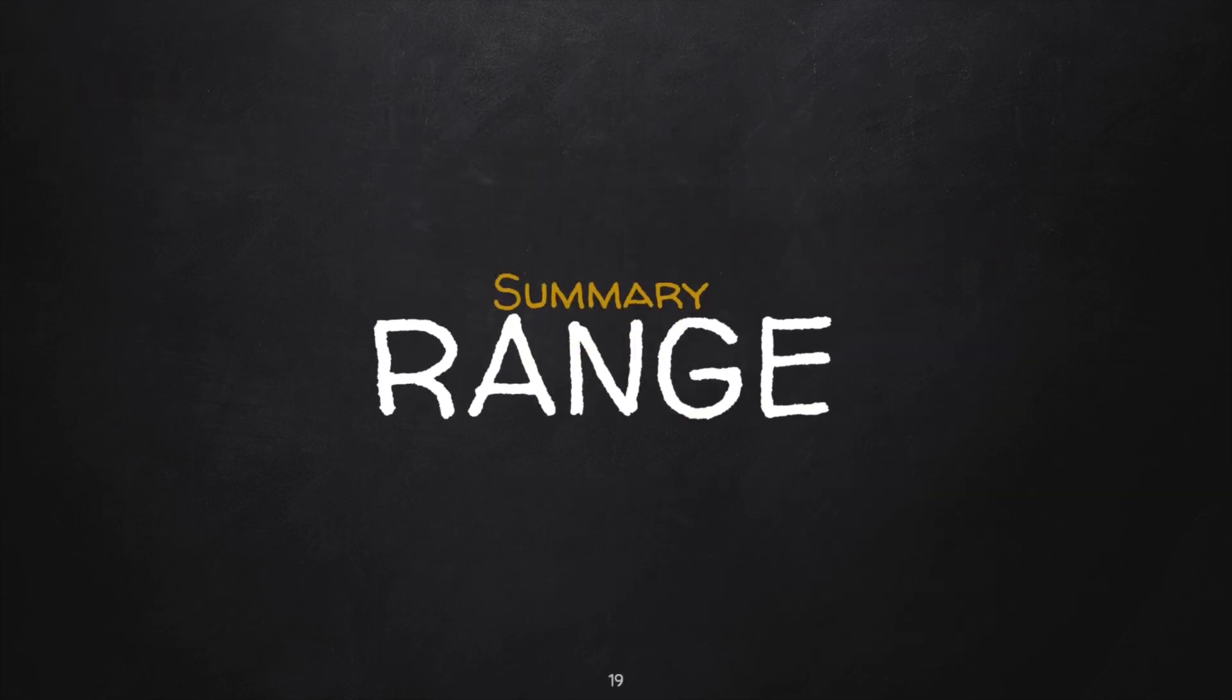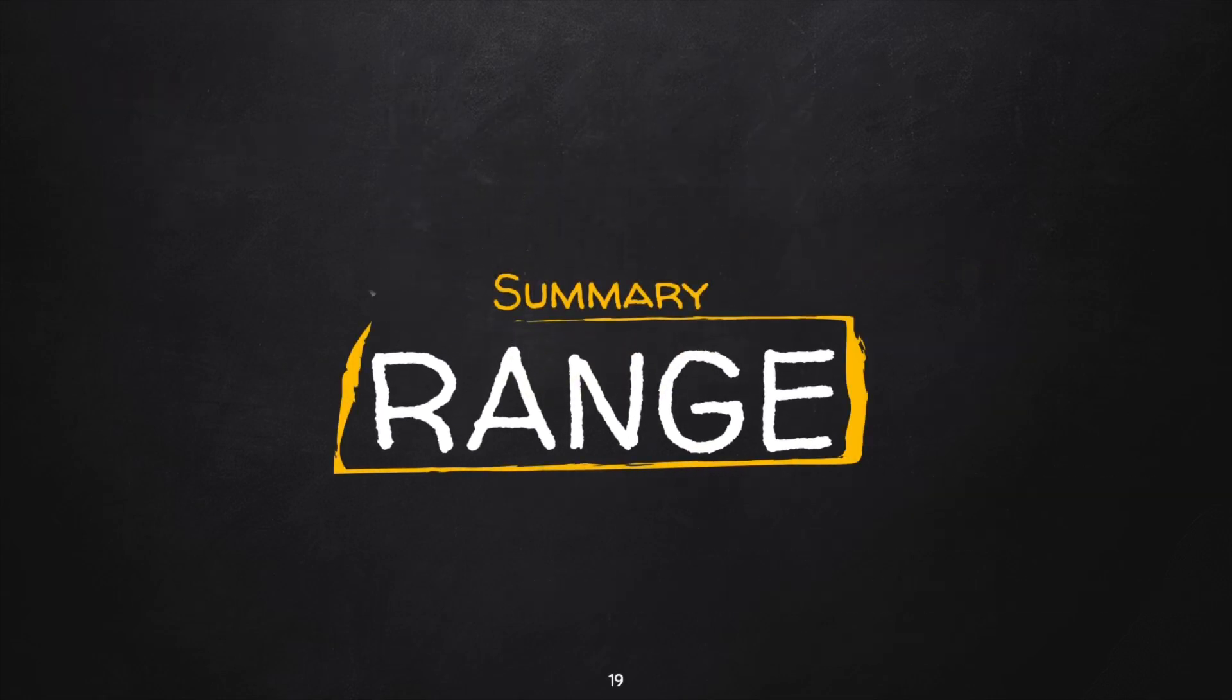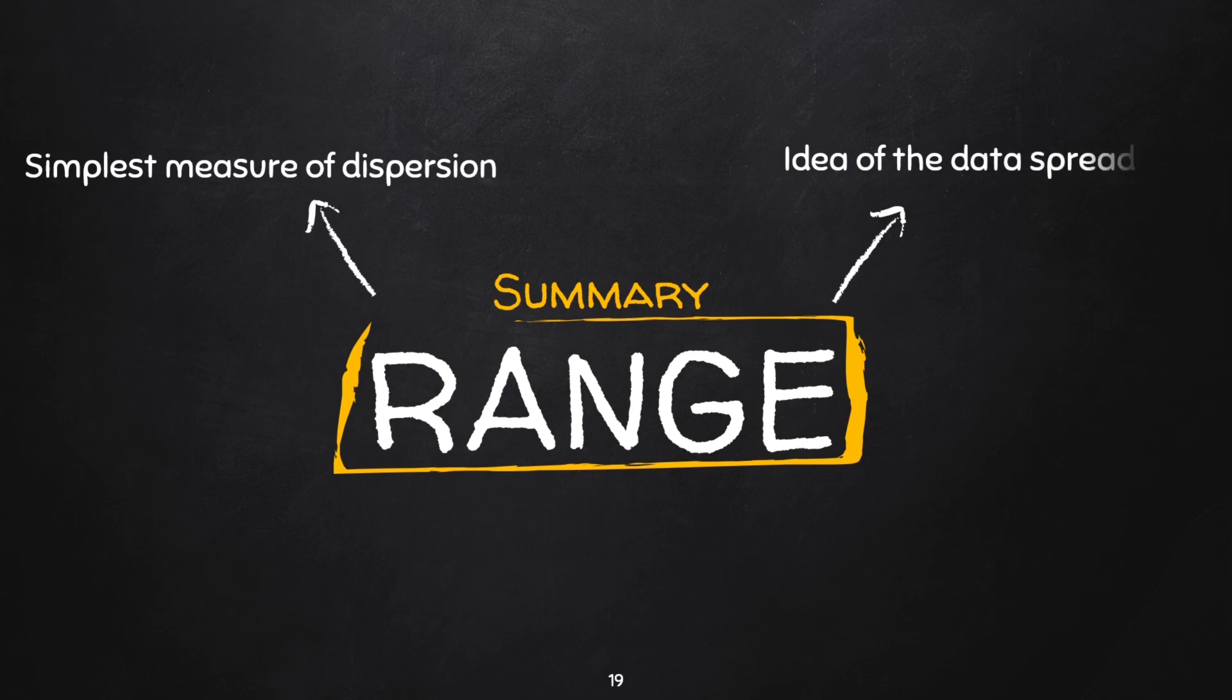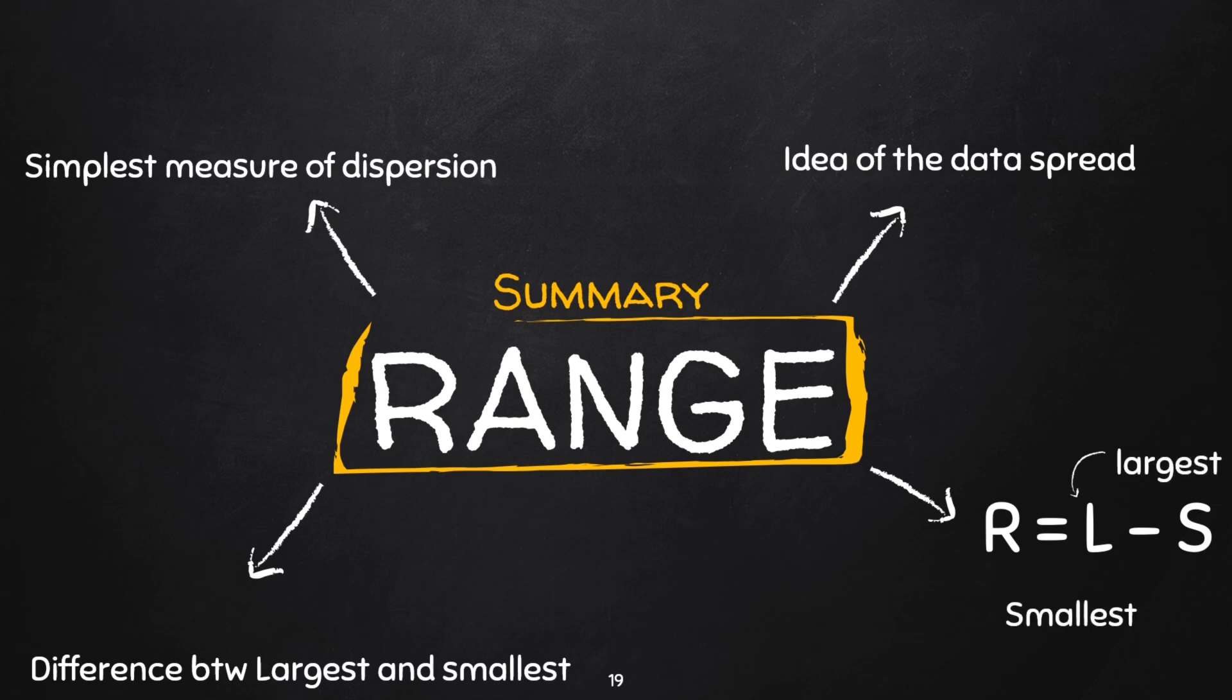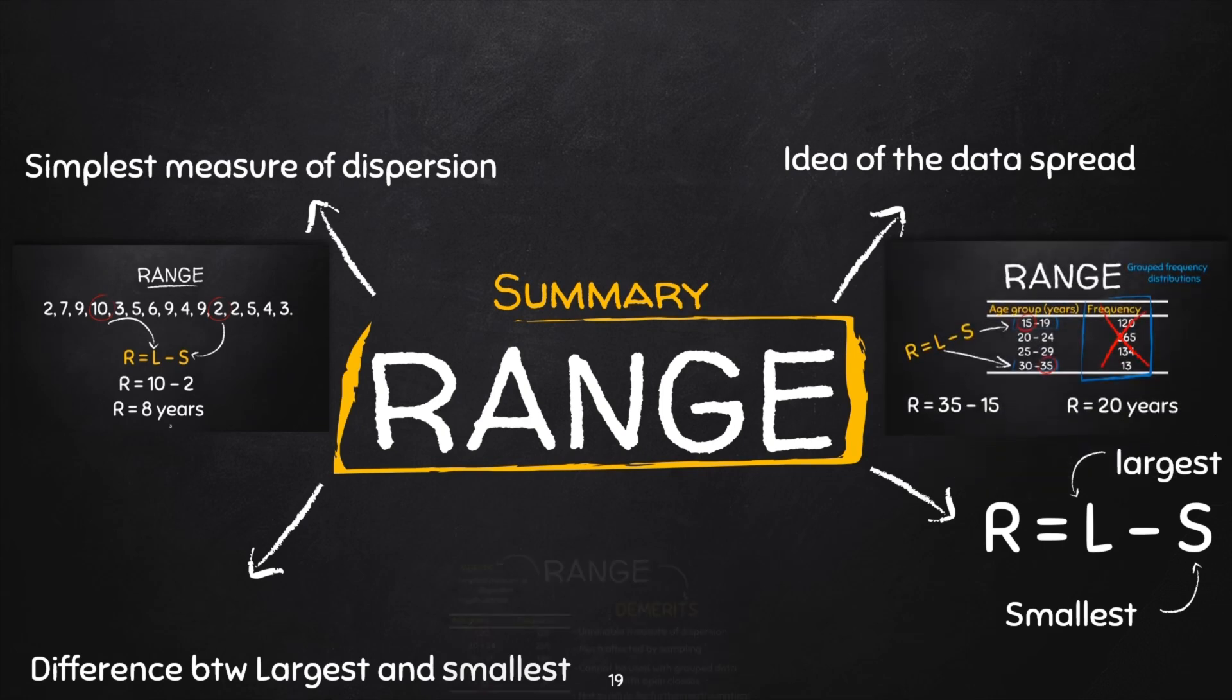So this is what you need to know about the range. And in summary, the range is the simplest measure of dispersion in statistics. It's an easy way to have an idea of the spread of the data values in a data set. It is calculated by subtracting the smallest value from the largest value in a data set. It can be obtained from raw data as well as from frequency distributions. And it has a couple of merits and demerits.